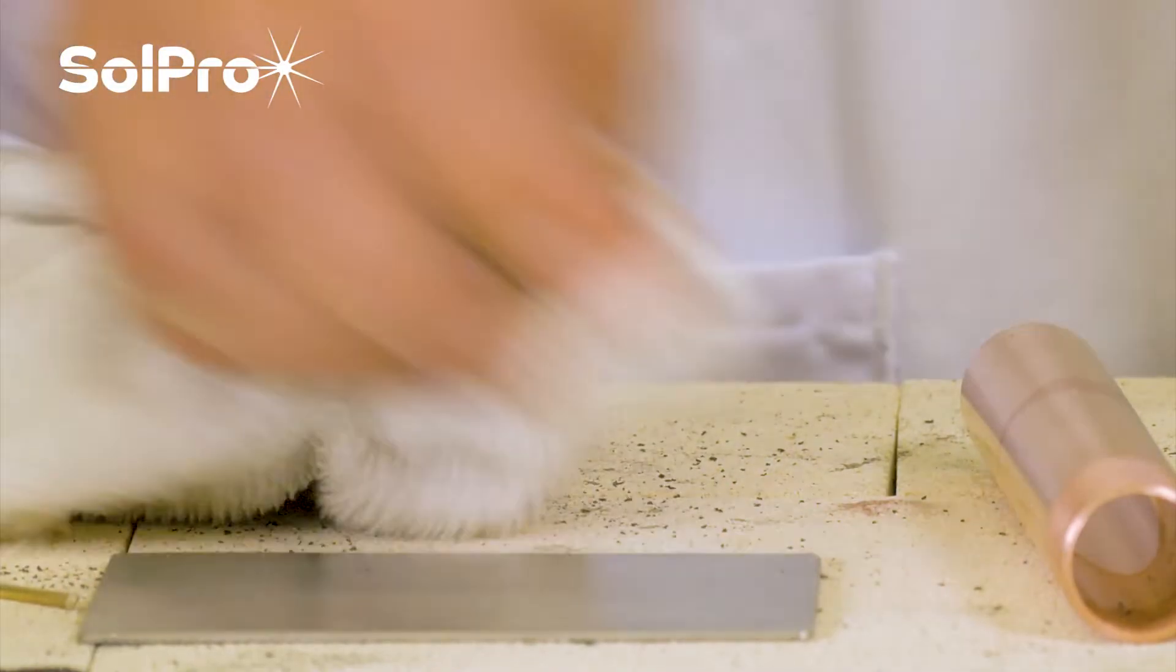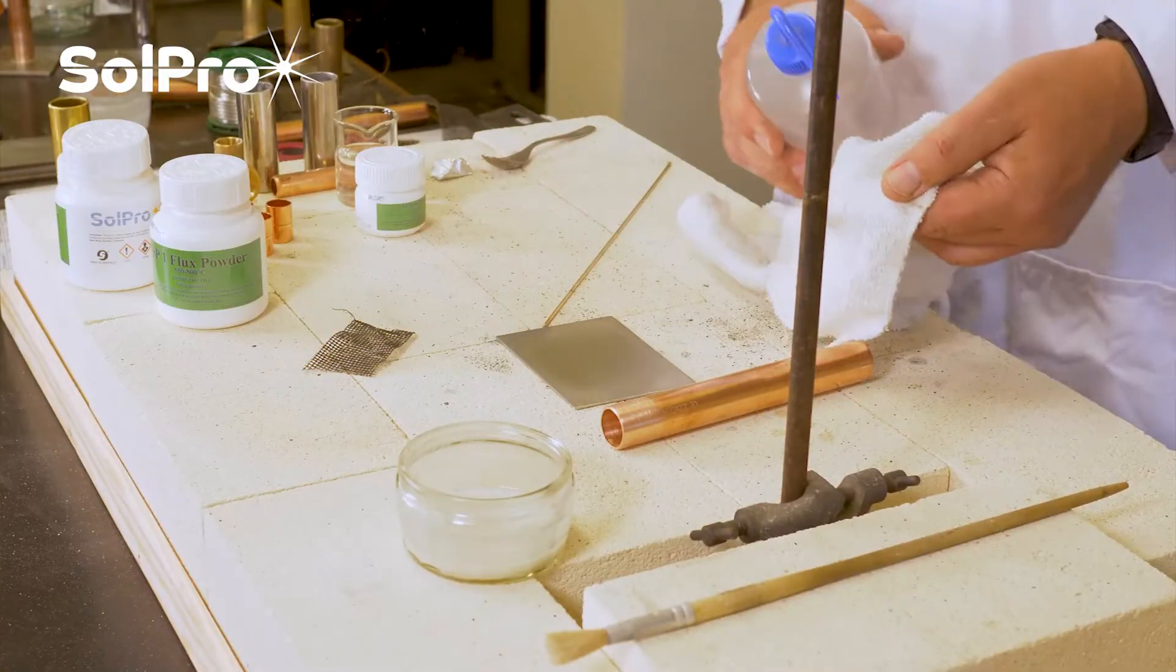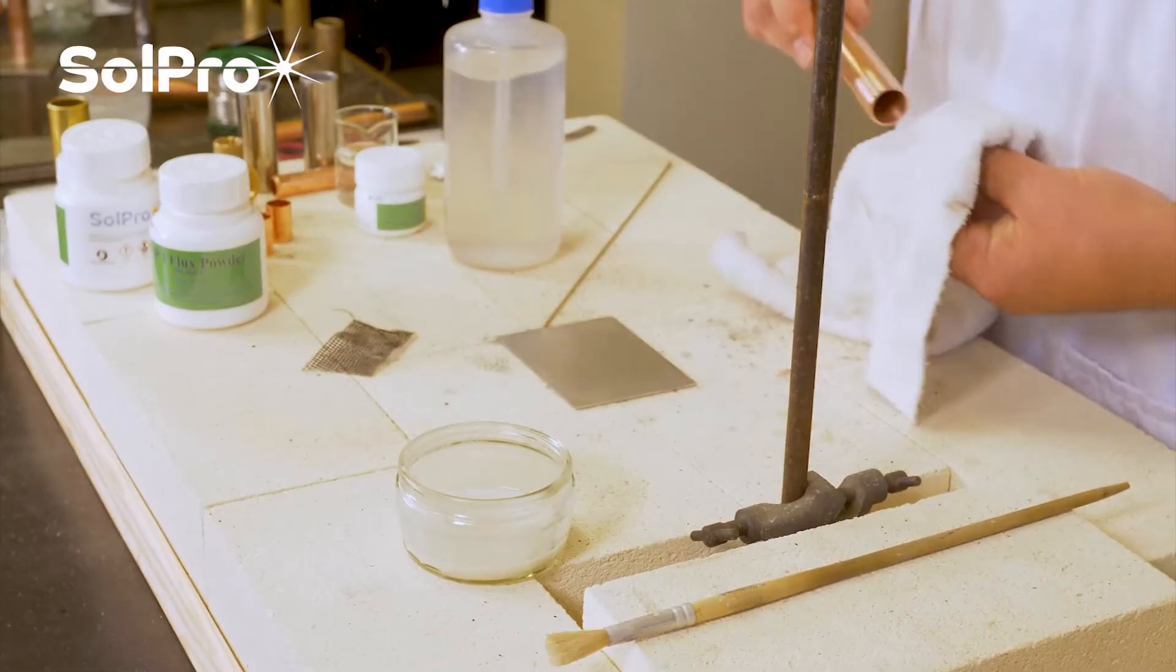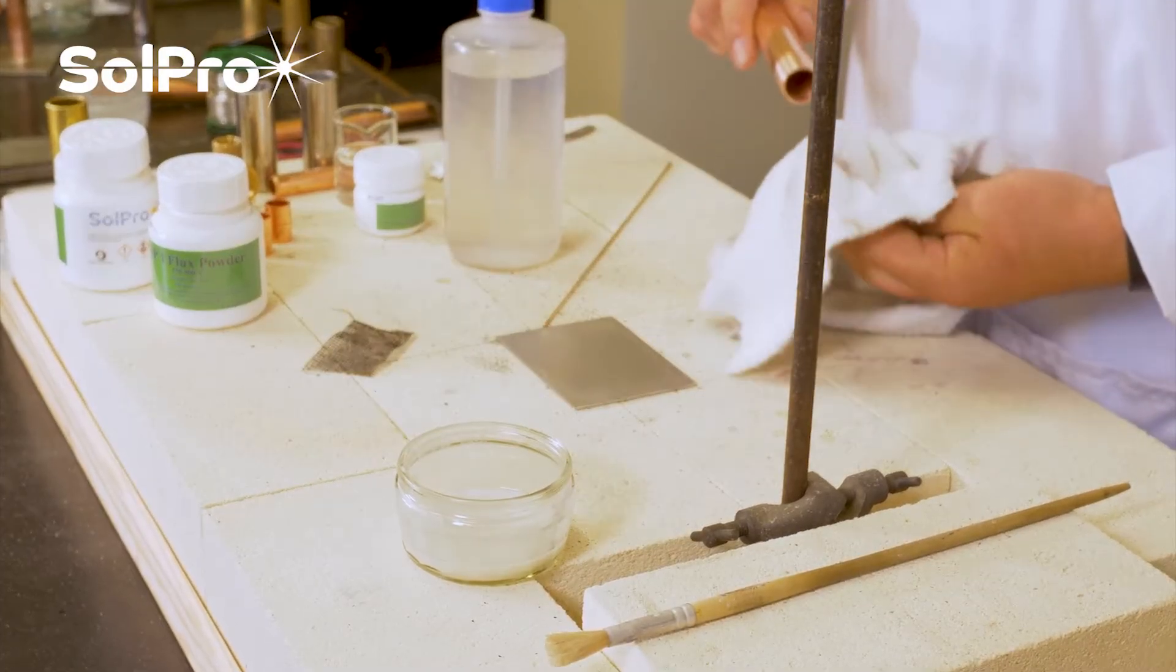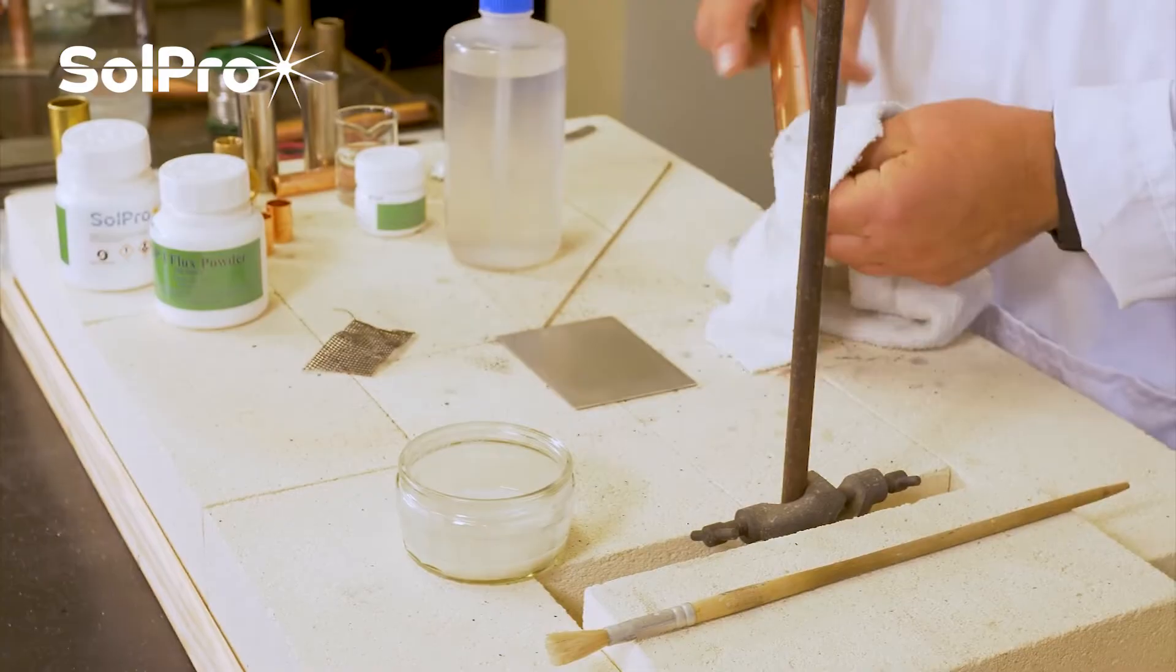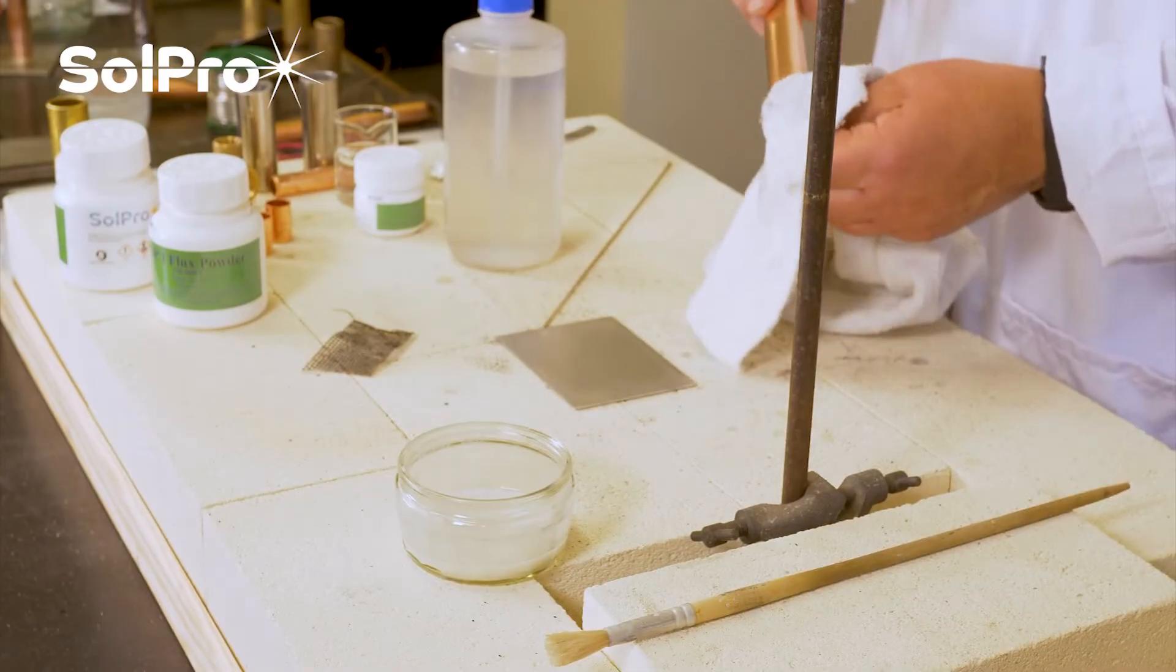We're giving it a nice clean there, do the same with the end of the piece of copper. Like all good brazing practice, getting it clean is the most important part of it.